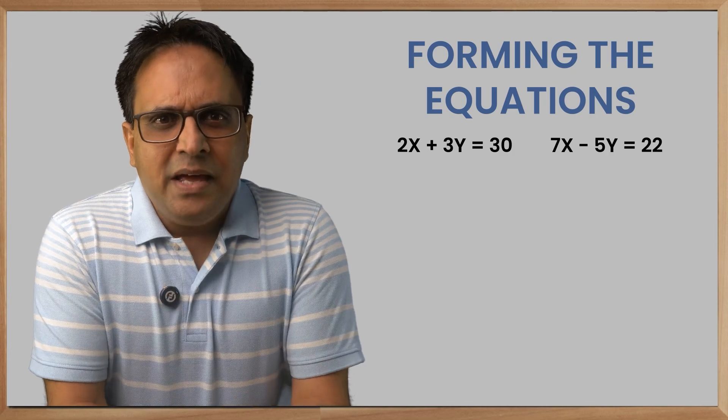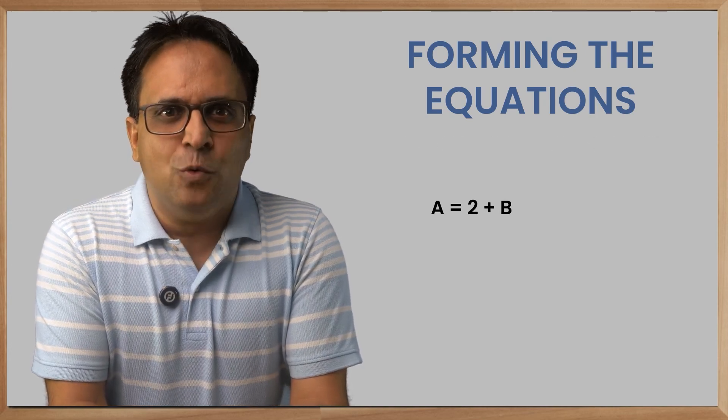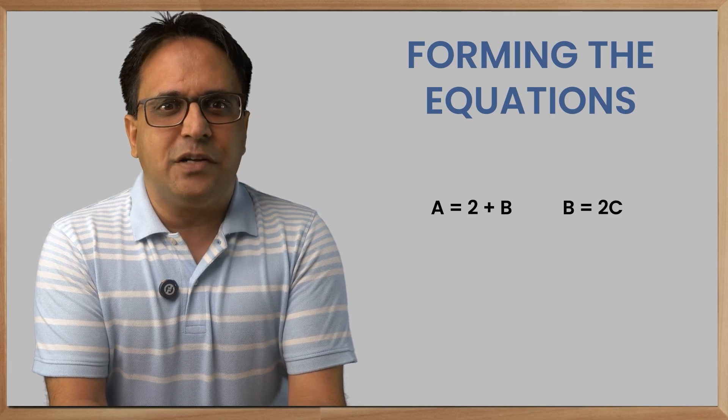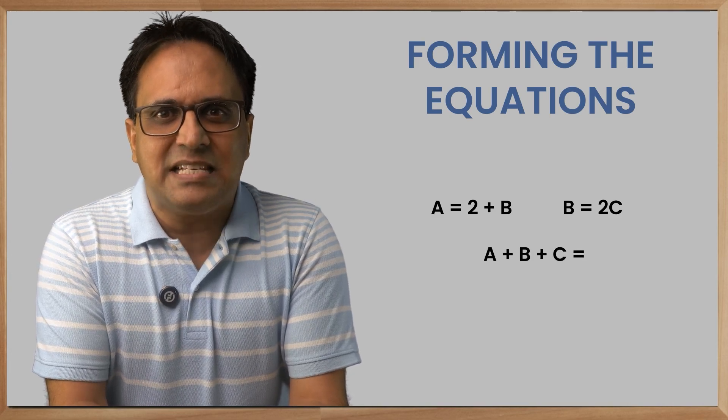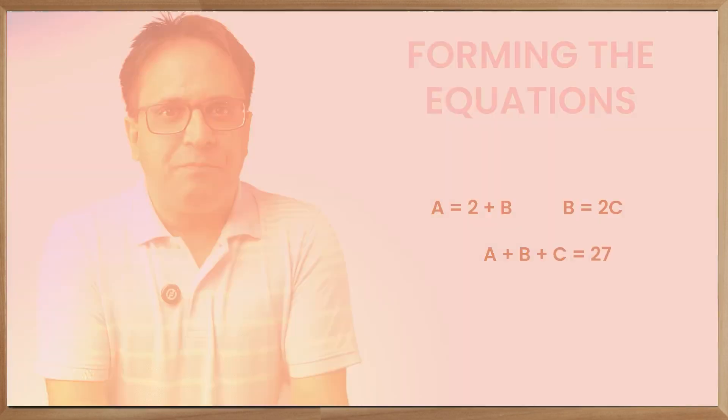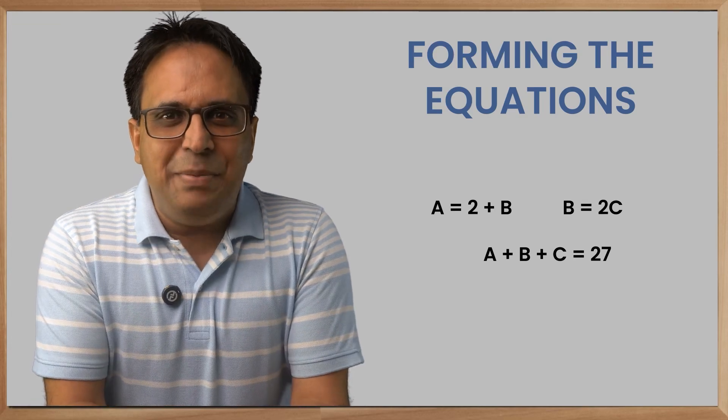Let's try an example. A is two years older than B who is twice as old as C. If the total ages of A, B, and C is 27, how old is B? Solving this we get B is equal to 10 years.